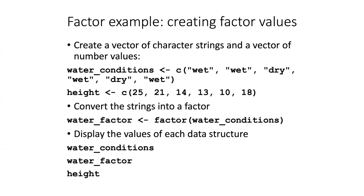Let's begin looking at factors by seeing how we can create them from vectors. We're going to begin by creating one vector of character strings and one vector of numbers, and then the vector of character strings we are going to turn into a factor using the factor function. After we do this, we'll take a look at each of the kinds of data structures we've created to see how they differ from each other.